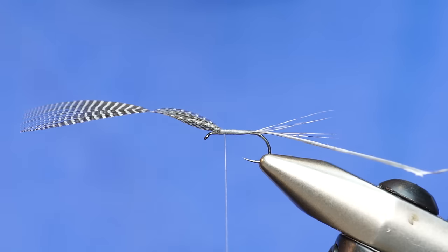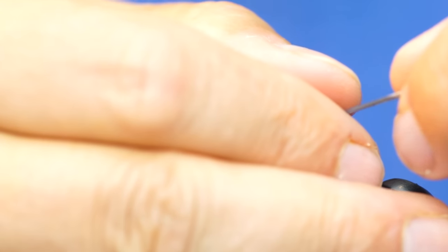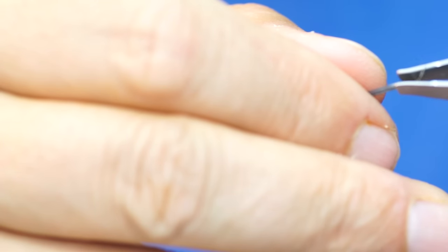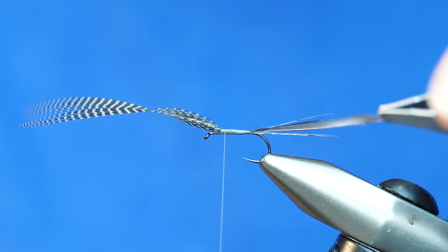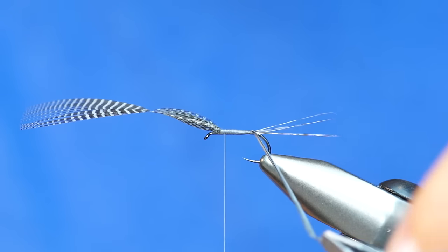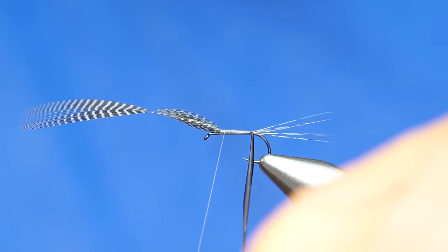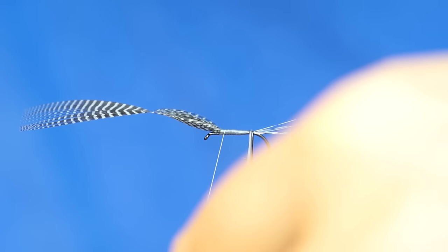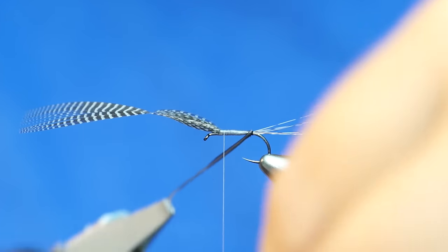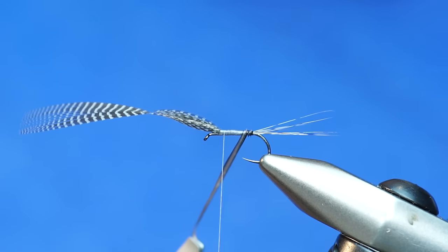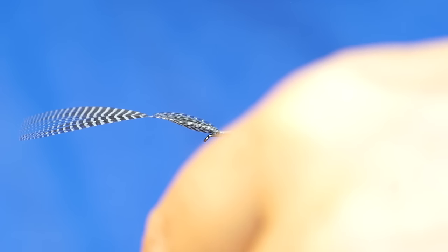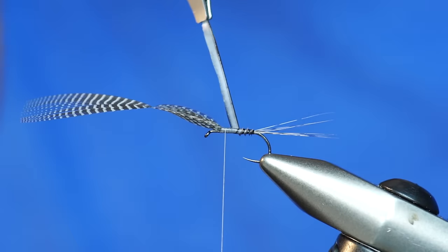Now I'm going to grab some hackle pliers. Hackle pliers allow me to absorb a little bit of the shock when I'm going to wrap this, so I find I do a little better with hackle pliers. Then you just want to make sure that you have that ridge along the back edge as you wrap. Notice as I wrap that that segmentation is going to appear on the biot and the ridge will be pronounced.